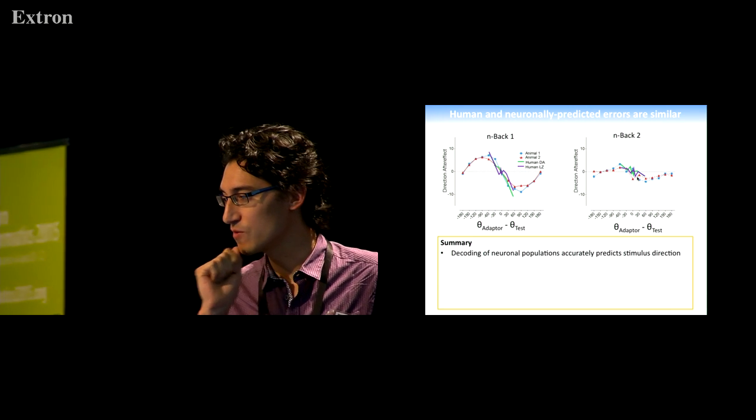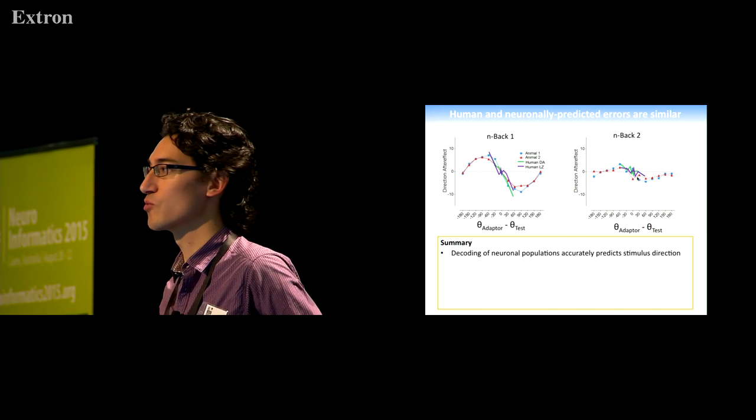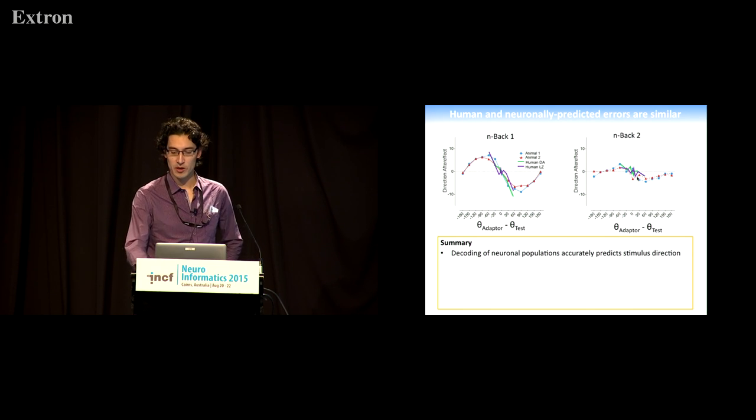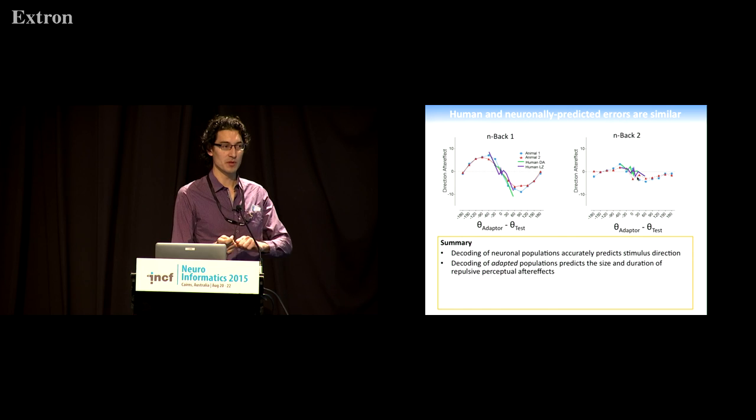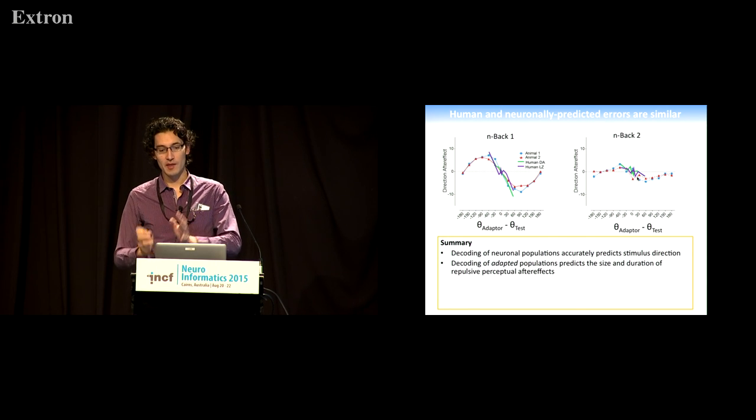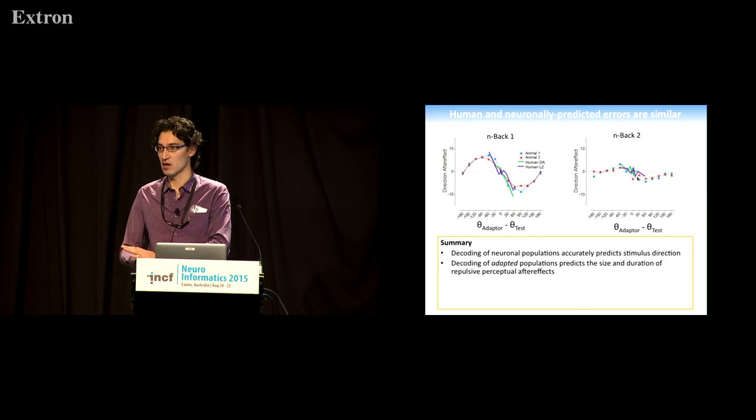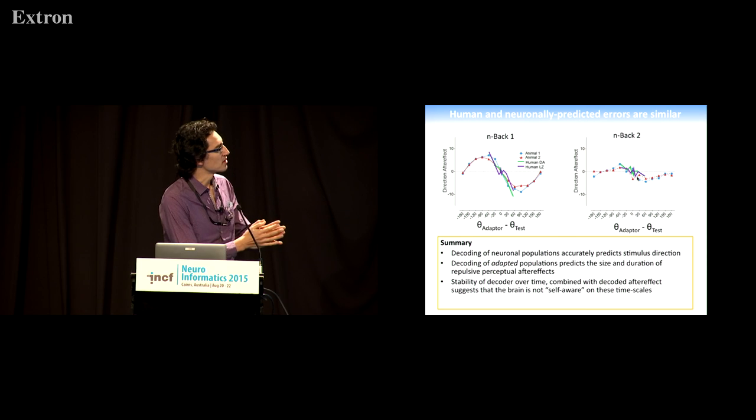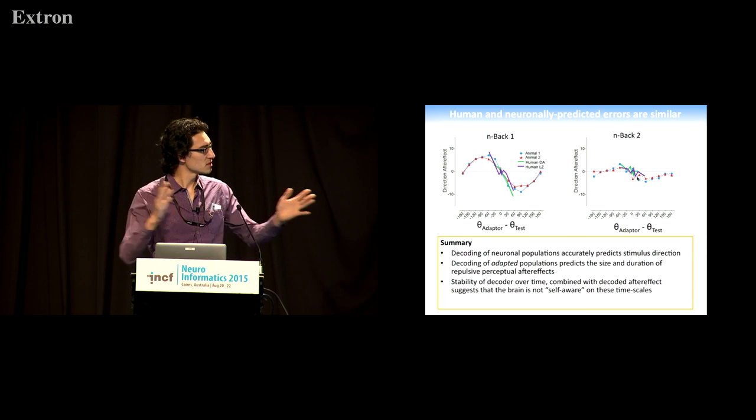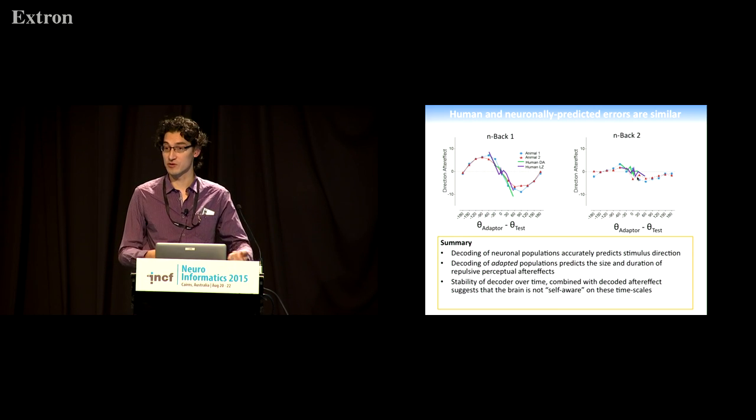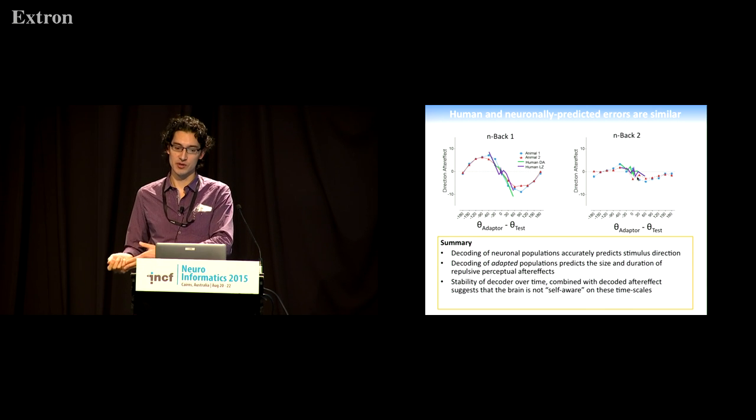To summarize our results, we found that we can decode the activity of neuronal populations recorded in a non-human primate to accurately predict stimulus direction, but we can also decode adapted populations by manipulating our training and testing sets in the decoding or classifying. Then we can predict the size and duration of repulsive perceptual aftereffects. The stability of this decoding over time—the stability of this decoder over time within an adaptation period or within a test period, in combination with the decoded aftereffect that I did show you—suggests that the brain is not self-aware of its own sensory tuning on these time scales.